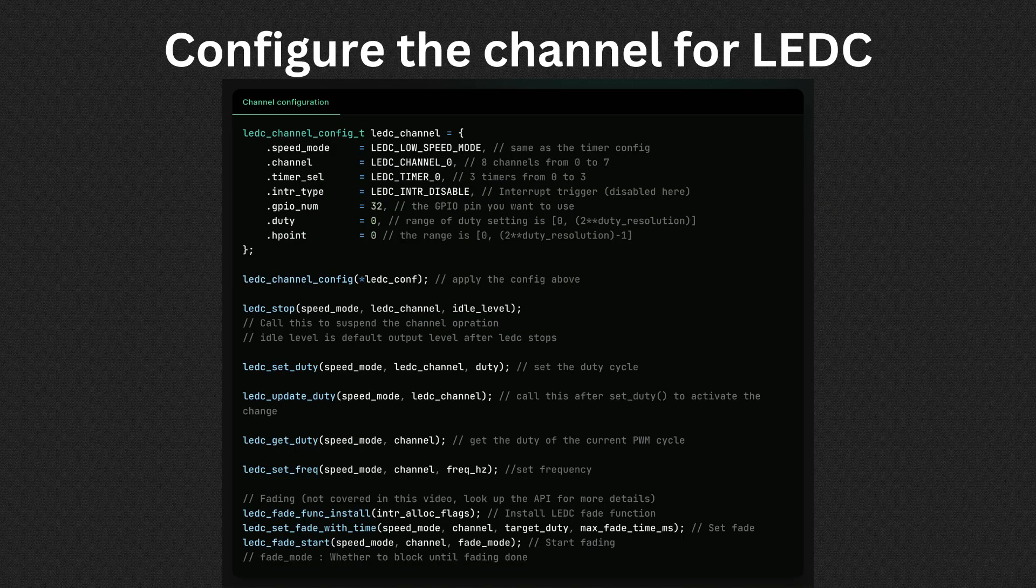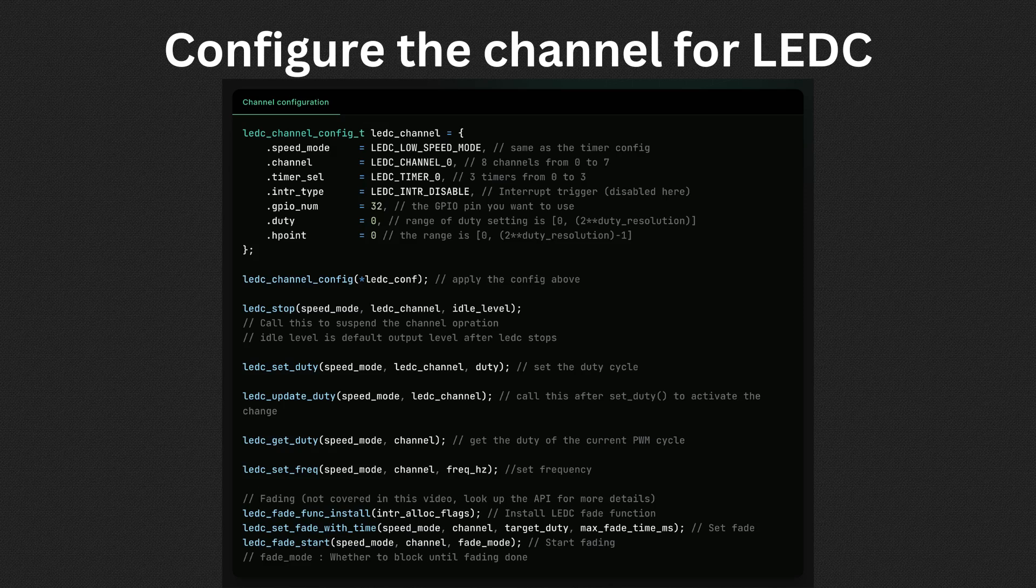Then we can move on to the configuration of the LEDC channel. We have to add the channel, the GPIO pin we're going to use to output the PWM, along with the duty and interrupt trigger. Note that we can set and update our duty cycle or frequency later. Using all this knowledge, we can now control our servo.